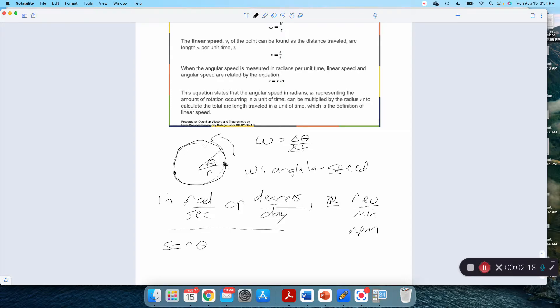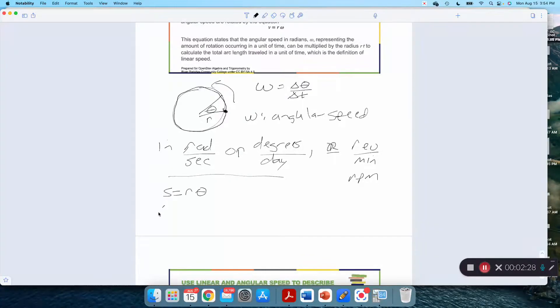What if I want to know how fast something is traveling, literally in meters per second or feet per second, its literal speed? Well, I could just think change in S per change in time would be R change in theta per change in time. That's just velocity, that's just speed. And change in theta over change in time we define to be R omega.